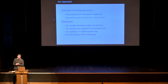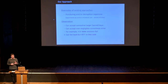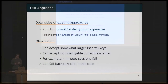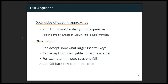On our way to achieving this, we looked for ways to offload expensive operations to less critical phases. We made some observations. For instance, the secret keys are usually held by relatively powerful servers, so it's not that much of an issue if we have somewhat larger secret keys. If it helps us reduce computation times upon decryption or puncturing, then it's perfectly acceptable.